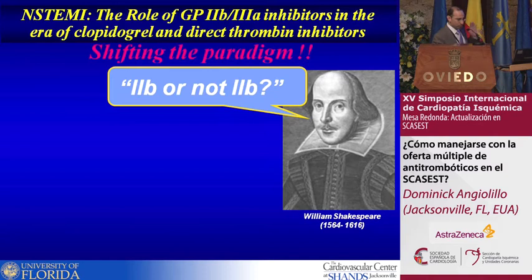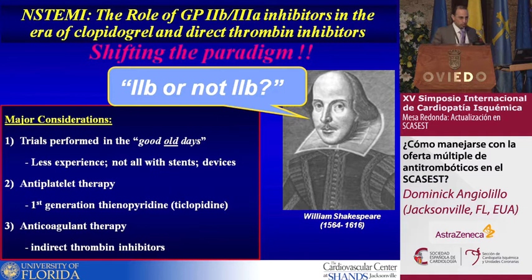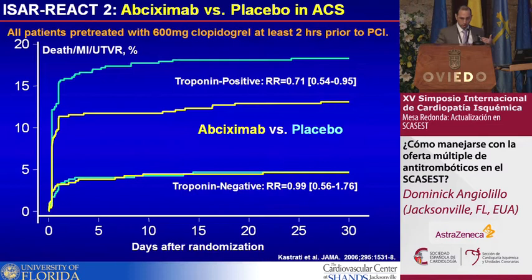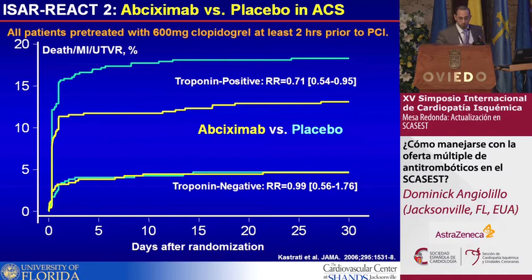Let's speak about 2B3A inhibitors — to be or not to be. There's been a lot of confusion about their role because we've been looking at seminal trials performed in the mid-90s. Please keep in mind these trials were performed in the good old days — less experienced, not all with stents, many with first-generation thienopyridines like ticlopidine or low-dose clopidogrel, and only indirect thrombin inhibitors. Looking at the modern era with the ISR-REACT trial, where all patients were pre-treated with 600 milligrams of clopidogrel, the use of a 2B3A inhibitor in ACS patients was only positive in those with cardiac enzymes. So the role of 2B3A inhibitors is not useful in ACS patients who are troponin negative.